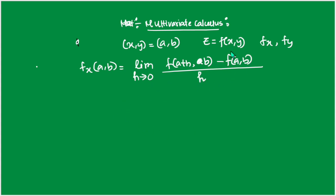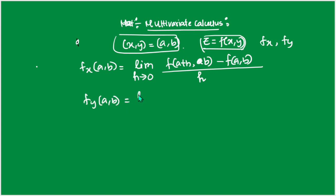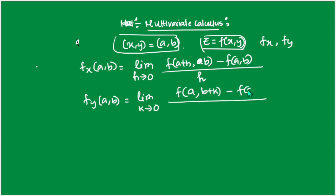And similarly, fy(a, b) = limit as k→0 of [f(a, b+k) − f(a, b)] / k, where the x component stays at a while the y component changes from b to b+k. This is the definition of the partial derivative of z = f(x,y) at point (a, b) with respect to both x and y.